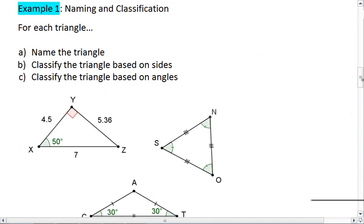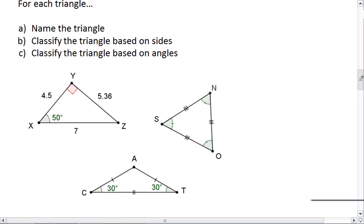Okay. So go ahead, try example one, naming and classification. For each triangle, I want you to name the triangle. And you only have to give one of the six possible names. And then classify the triangle both based on sides, and then classify the triangle based on its angles. So here are the three triangles that you have. Take a moment, work through this problem. When you're ready, resume the video.